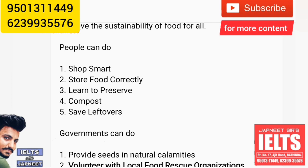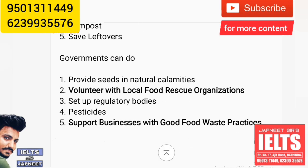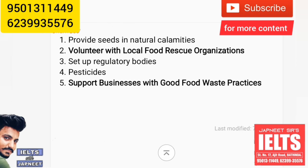Save leftovers — the food which is left over we have to save and reuse it. Now for things the government can do: firstly, the government should provide seeds and other necessities if any natural calamity takes place. The government can also volunteer with local rescue organizations. They can also set up regulatory bodies to make people aware not to throw or waste food.